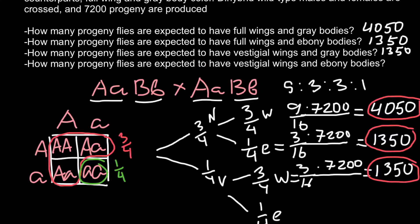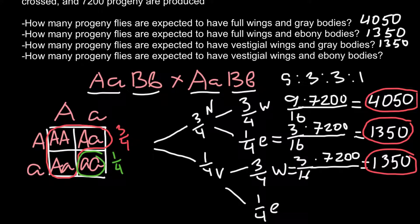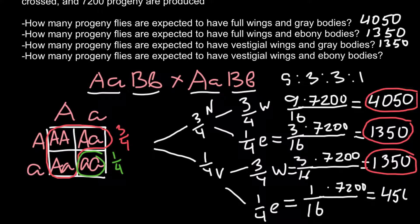The fourth question asks how many progeny flies are expected to have vestigial wings and ebony bodies. One-quarter multiplied by one-quarter gives one-sixteenth. Multiplying by 7200, our answer is 450. So 450 is the answer for the last question.